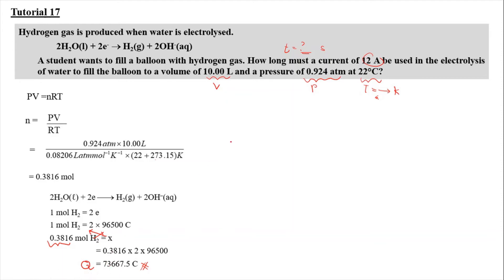Now, we can use Q is equal to IT in order to find the time, because we need to find the time taken. And I here is given as 12 ampere. So Q is equal to IT, and T here refers to in second. So you need to be really careful. So 73667.5 Coulomb equal to 12 T, because the ampere is 12. So 73667.5 divided by 12, you will get 6138.9 Coulomb.